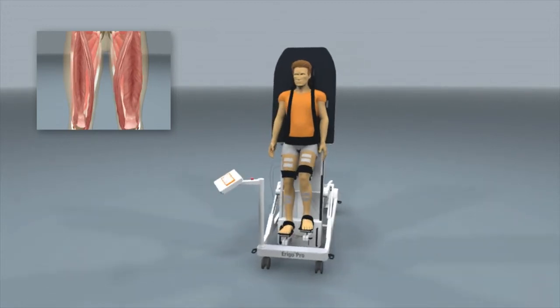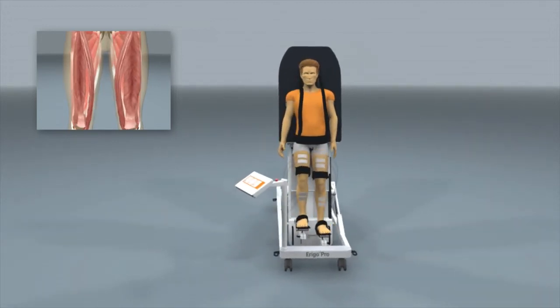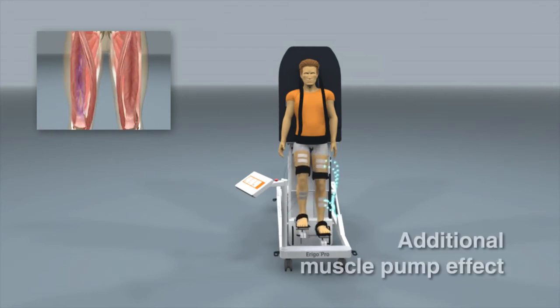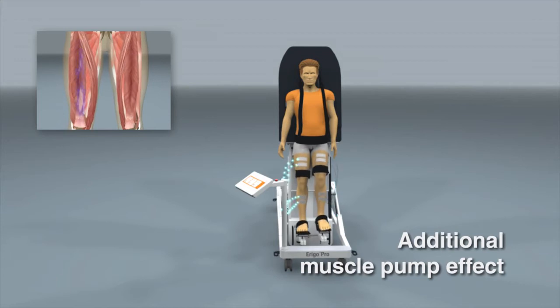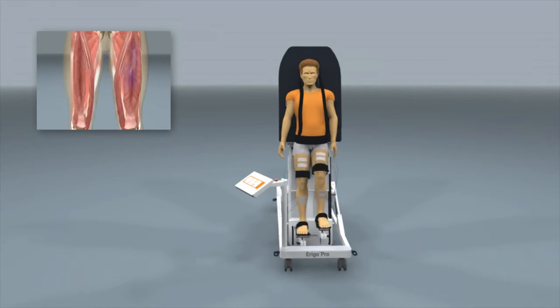The Erigo functional electrical stimulation supports the contraction of the lower limb muscles and increases the muscle pump effect. The stimulation is fully synchronized with the robotic leg movements and offers up to eight adjustable channels.